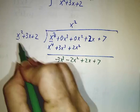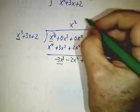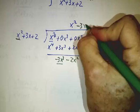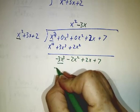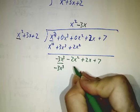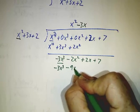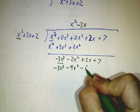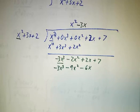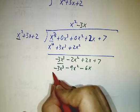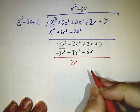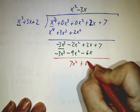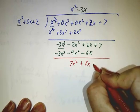Negative 3x cubed divided by x squared gives us negative 3x. And we subtract off negative 3x cubed minus 9x squared minus 6x. And that gives us 7x squared plus 8x plus 7.